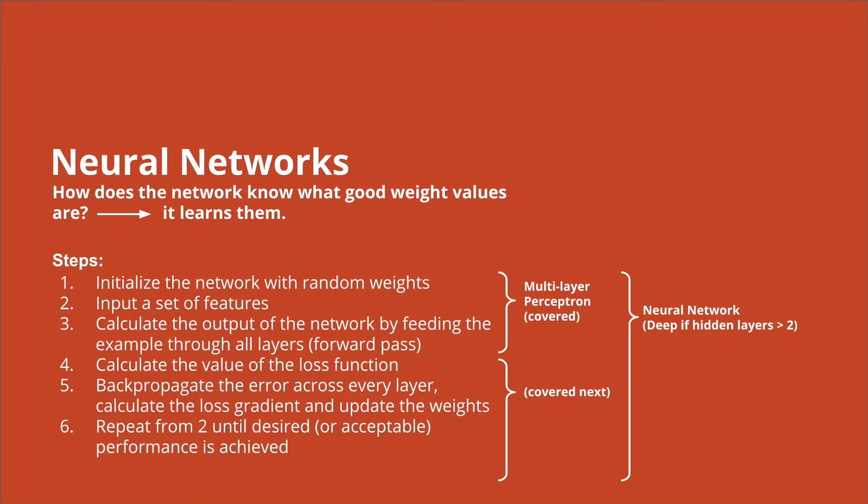So how can a neural network come up with the optimized weights in order to make good predictions? Well, we have to train the model. Here on the slide you can see a step-by-step procedure that you have to follow in order to train dense neural networks. First, we need to initialize the model with random weights or our best prior assumptions of what good model weights are.